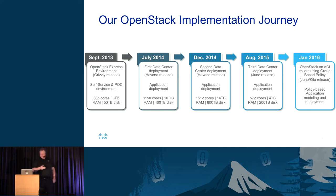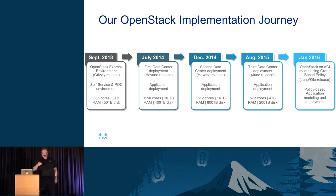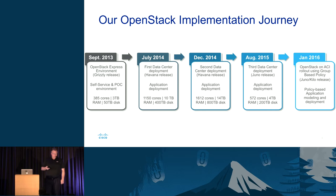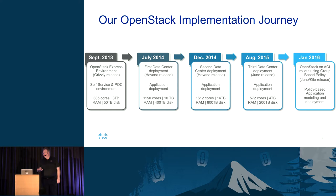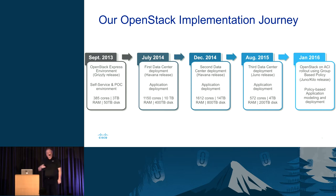We started with our Grizzly release as part of the Express environment. This environment allowed us to get experience operating and running OpenStack. The Express environment was specifically set up so that users with just a CEC username and password could get a VM or two for up to 90 days, allowing us to do POCs and other investigations. We did that in September of 2013. In July of 2014, we deployed Havana into our first data center in Research Triangle Park. In December of 2014, we deployed into our first Texas data center in support of production applications. In August of 2015, we did our Juno release into our second Texas data center to allow data center failover in Texas.